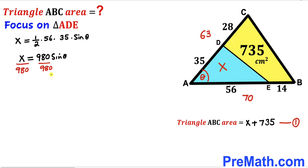Dividing both sides by 980 to isolate sine of theta, we get: sin(θ) = x / 980. I'm going to label this as equation number two.